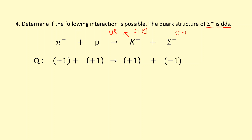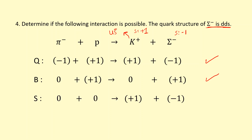Checking charge: zero on the left and zero on the right — conserved. Baryon number: the proton is a baryon and the sigma minus is also a baryon, so that's fine. For strangeness, the left hand side has zero, and on the right the K plus has plus one and the sigma minus has minus one, which cancel to give zero. Strangeness is conserved. There are no leptons, so lepton number doesn't need to be checked. This interaction is possible and represents how strange particles are produced via the strong nuclear interaction.